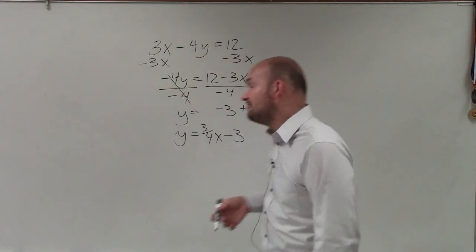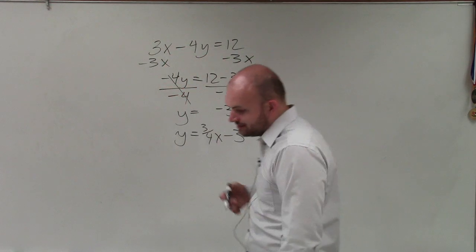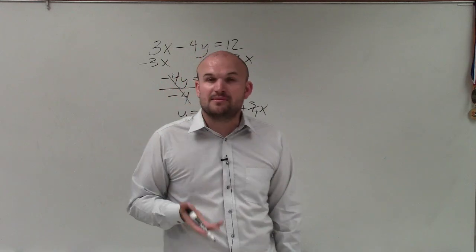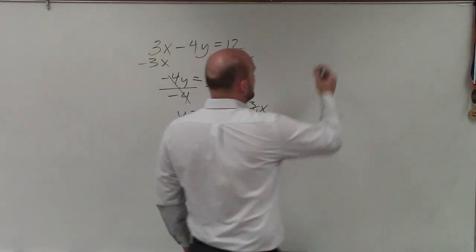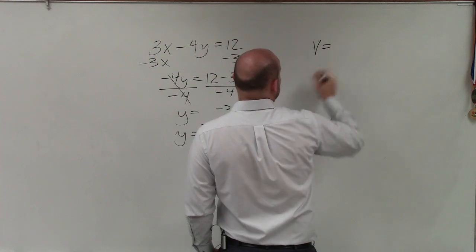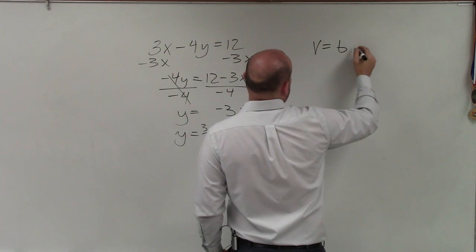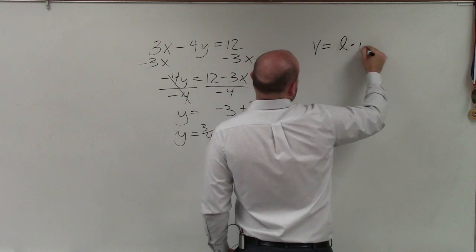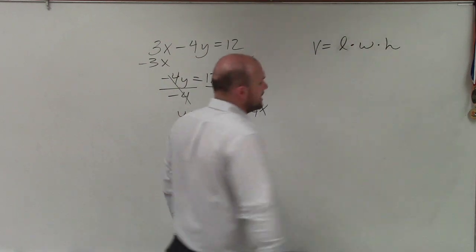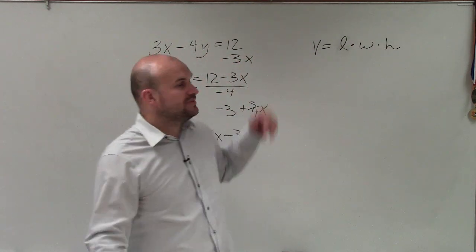So let's go ahead and look at another equation where there are no numbers. And most of those are very common in formulas, right? So what if I did volume equals length times width times height? So for a rectangular prism, this would be the volume.